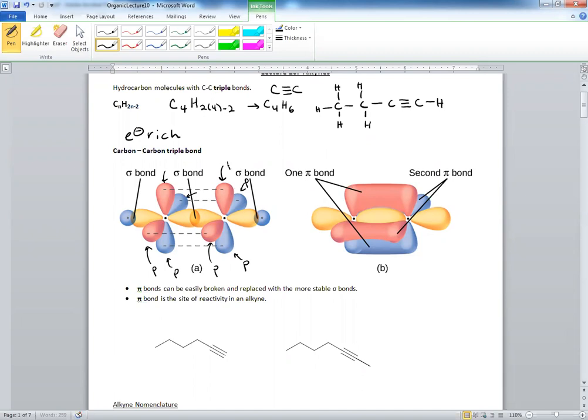And of course, they hybridize. And they form, again, two pi bonds, as you can see right there.